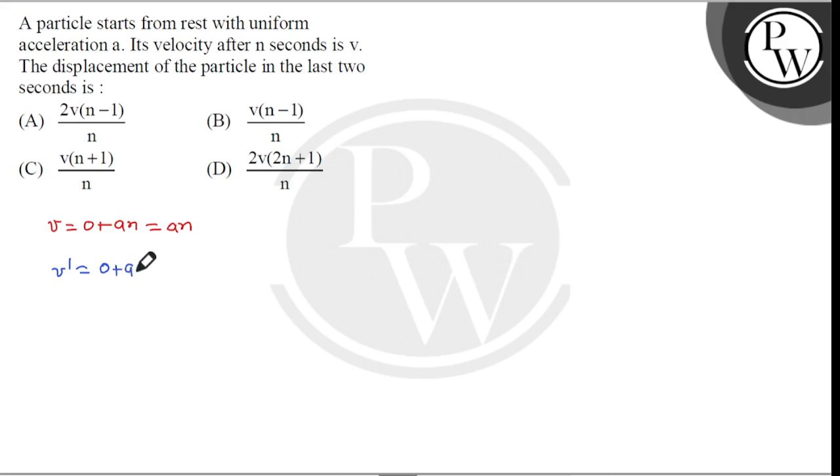By the third equation of motion, v square minus v dash square is equal to 2 a s. If we make a path diagram, the situation will be: this is point a, this is b, and this is c. At n minus 2 seconds and at n seconds, velocity here is v dash and here velocity is v. We need to calculate the displacement from b to c, which we can calculate using the third equation of motion.